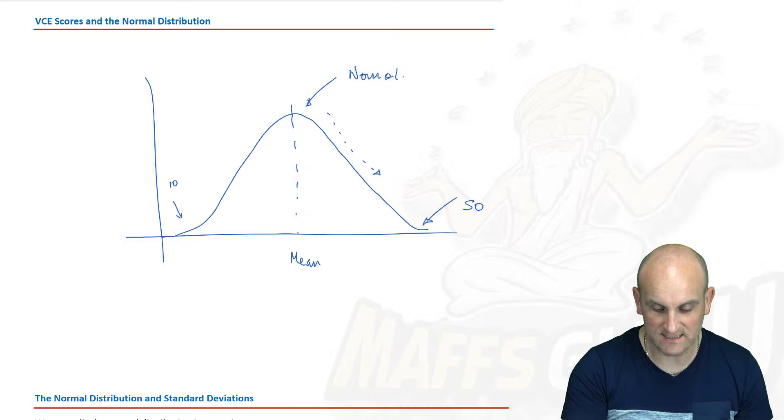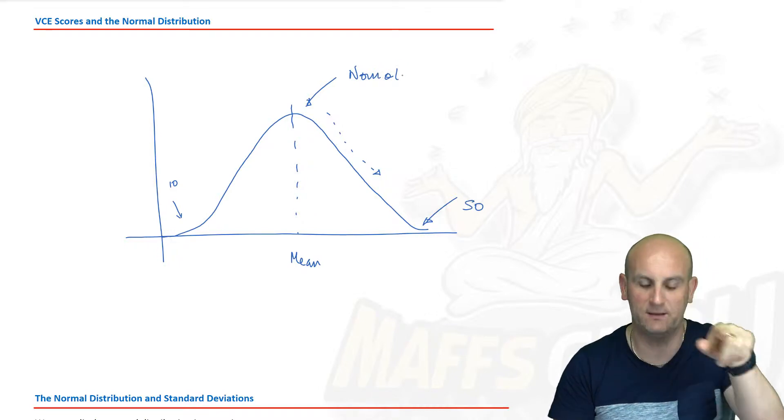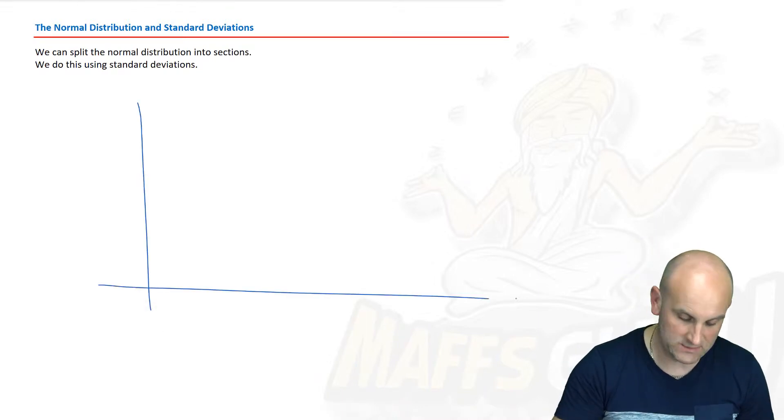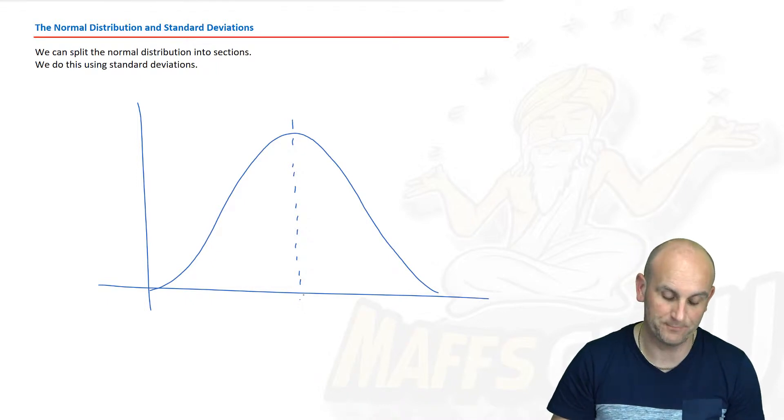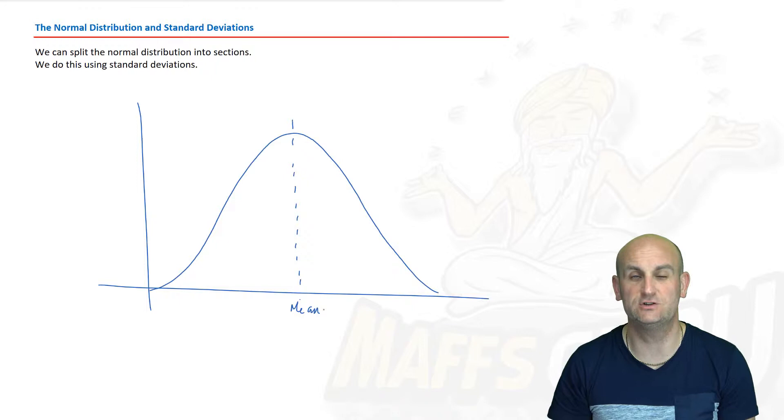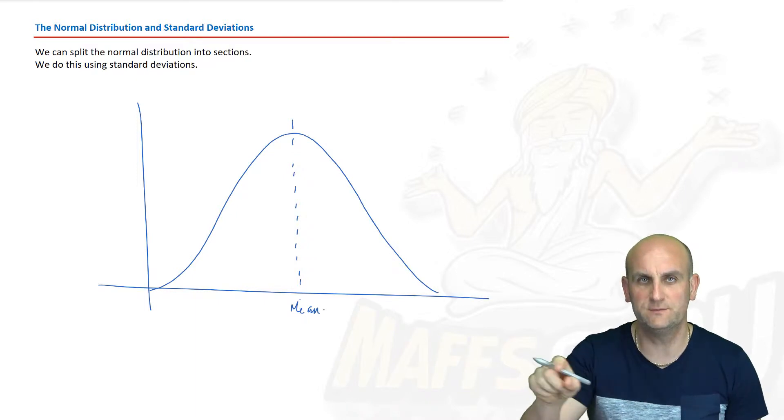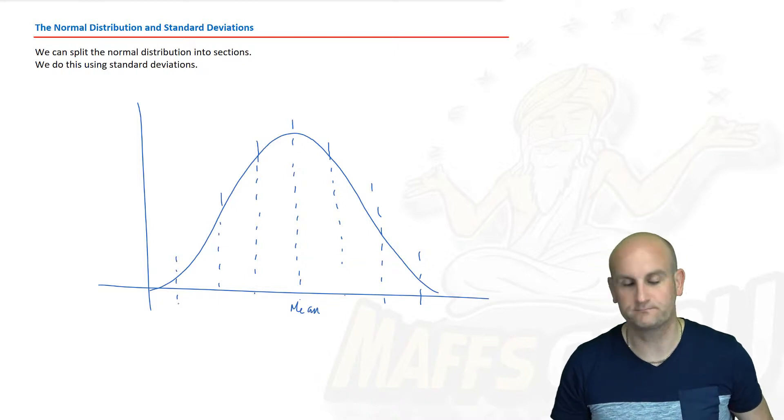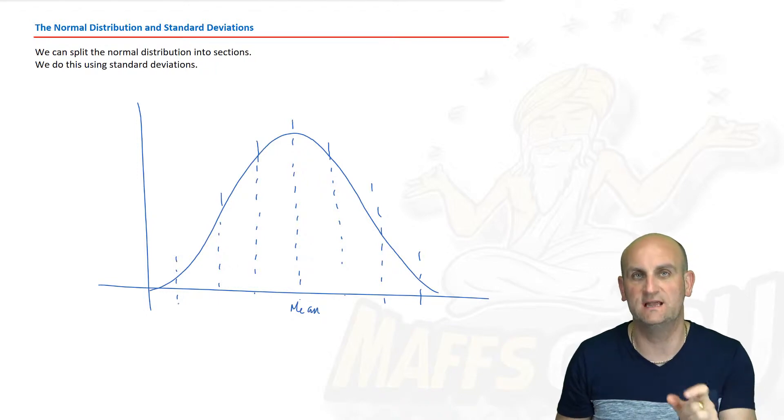This thing here is called a normal or normal distribution. We can split that bell curve up into a number of key points or key sections. Getting used to drawing these things is really important. The first thing is that this central value here is our mean. Then what we do is we actually split it into thirds.